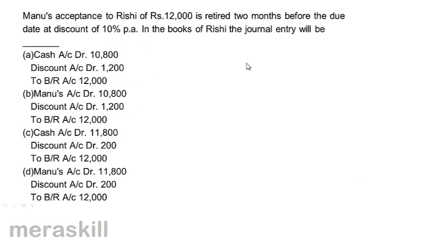Manu's acceptance to Rishi of rupees 12,000 is retired two months before the due date at a discount of 10 percent per annum. In the books of Rishi, the journal entry will be — Manu's acceptance means it's a bills payable in Manu's books; in Rishi's books it is a bill receivable. Option A: cash debit 10,800, discount account debit 1,200, to bills receivable 12,000.